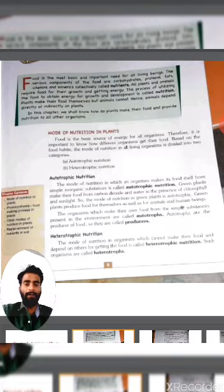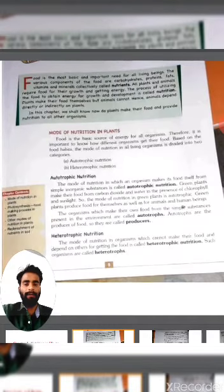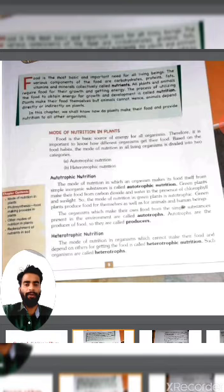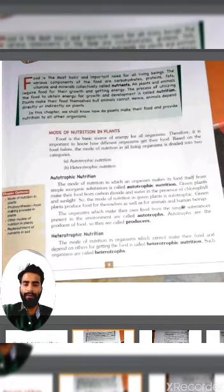Organisms that make their own food from simple substances present in the environment are called autotrophs. Autotrophs are the producers of food, so they are called producers.